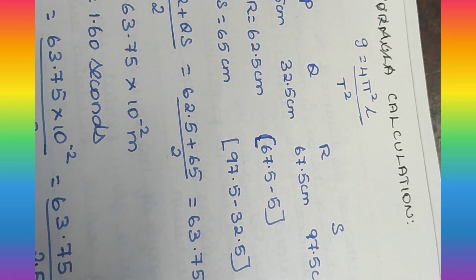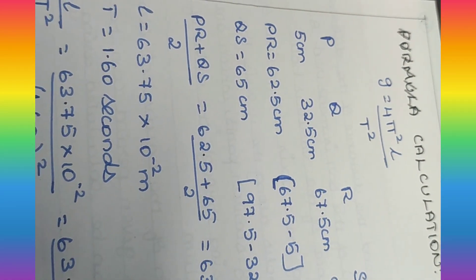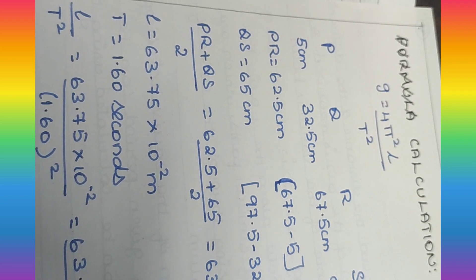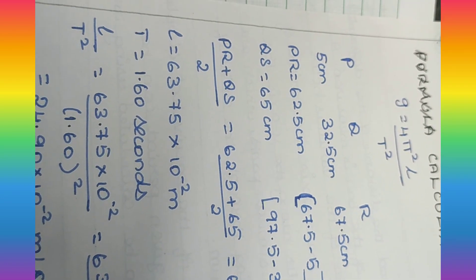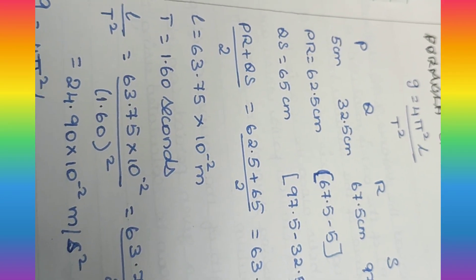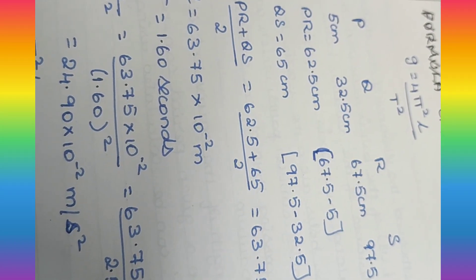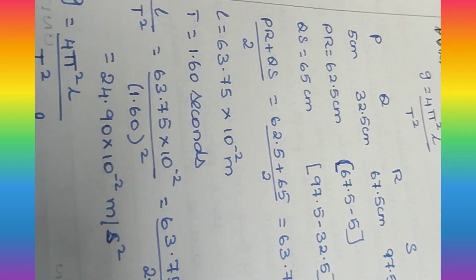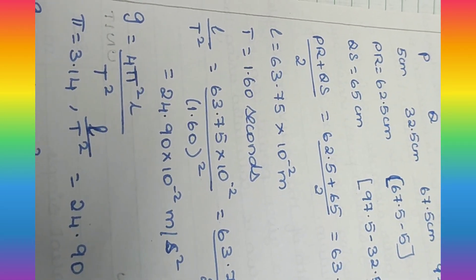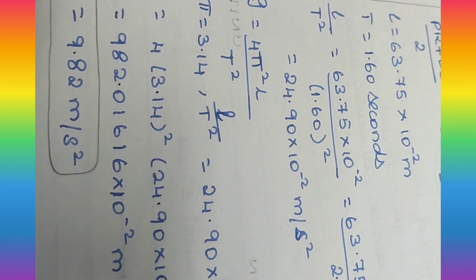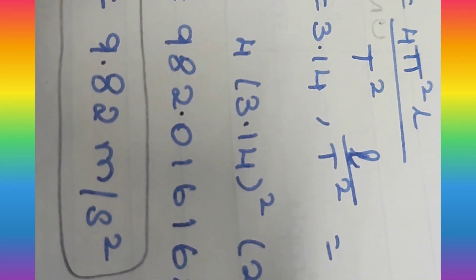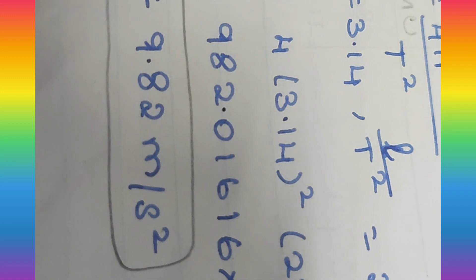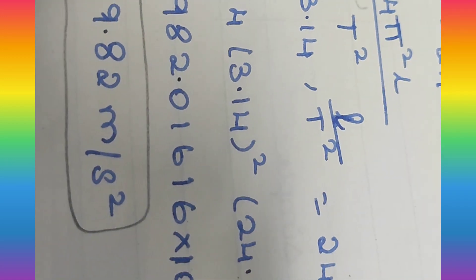The formula for finding acceleration due to gravity uses P value, Q value, R value, and S value, as well as PR value and QS value — all calculated here. For measuring L, PR plus QS will be added and divided by 2. The corresponding time period is taken from the graph. All values are substituted and calculated. Finally, we get the exact value of G — that is, the constant value of G is 9.8 meters per second square.